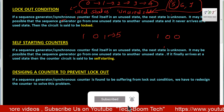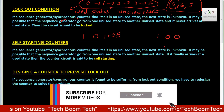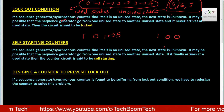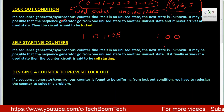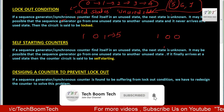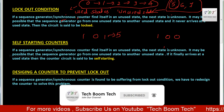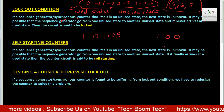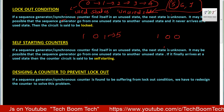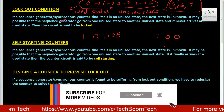If it is in an unused state, it will continue to cycle through unused states — it will not return to a used state. That is what we call a lockout condition. The counter will not come back to the used states; it will remain locked in a cycle of unused states. That is why we call this a lockout condition.